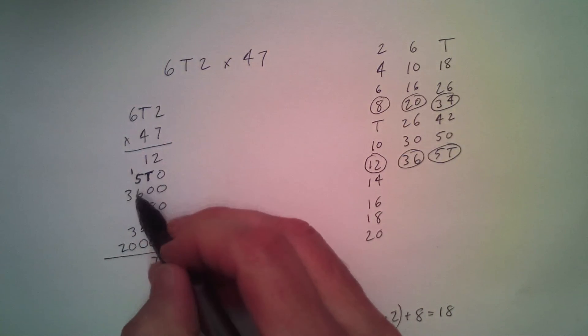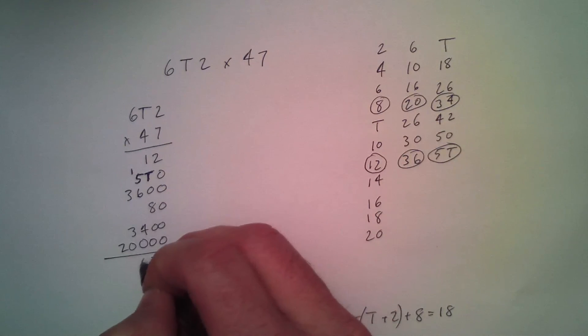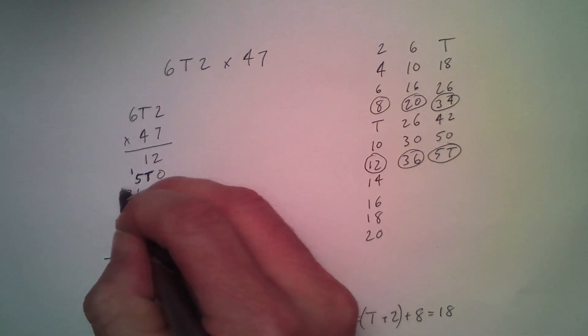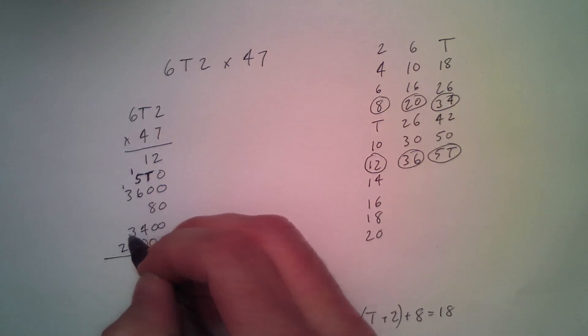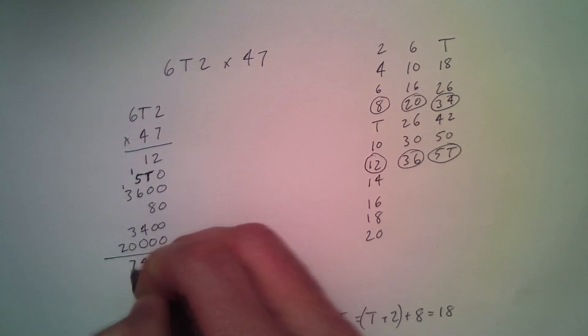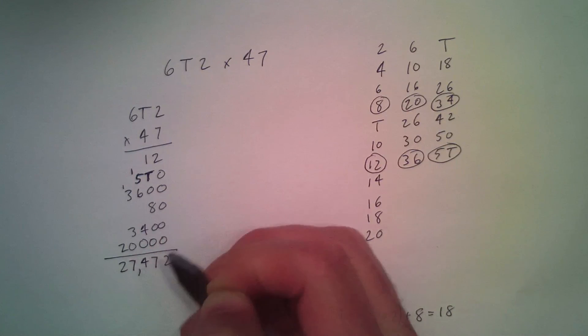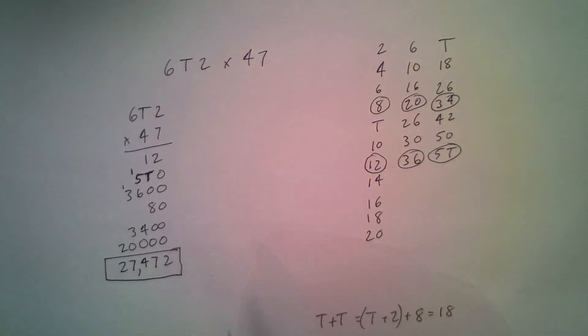So 1 plus 5 is 6. 6 and 6 is a dozen. And 4 is a dozen 4. So 4 carry a dozen. So 1 and 3 is 4. 4 and 3 is 7. And 2. So I'm not even going to try to name that number, but this is our product.